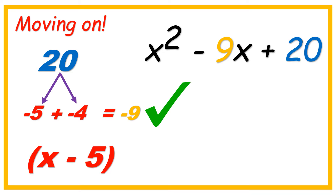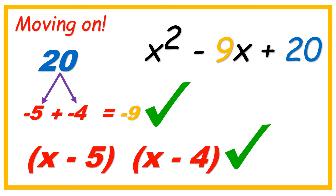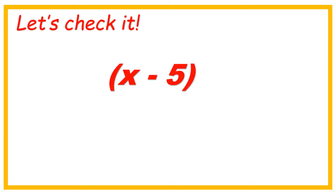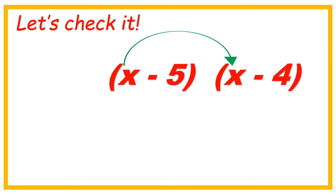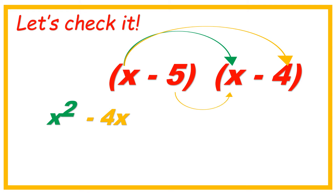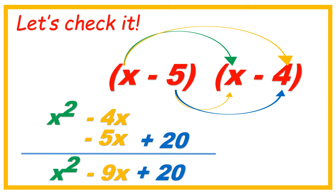Our factors are x minus 5 and x minus 4. We got it! Now let's check it. x minus 5, x minus 4. We're going to use the FOIL method. First: x times x is x squared. Outer: x times negative 4 is negative 4x. Inner: negative 5 times x is negative 5x. And L for last: negative 5 times negative 4 is positive 20. We got it! x squared minus 9x plus 20. Just like that!